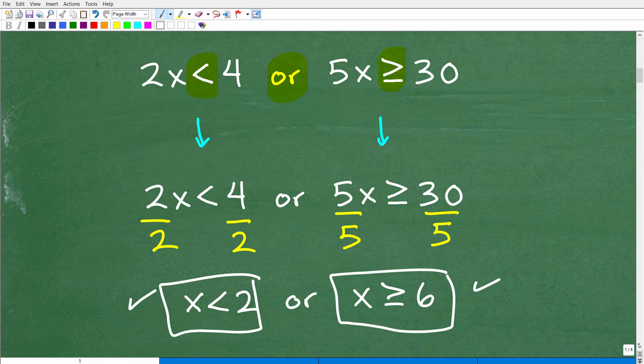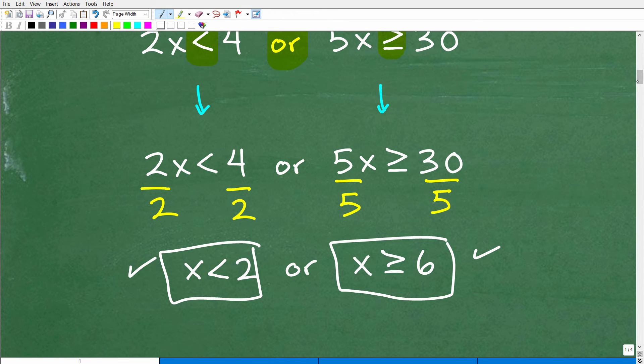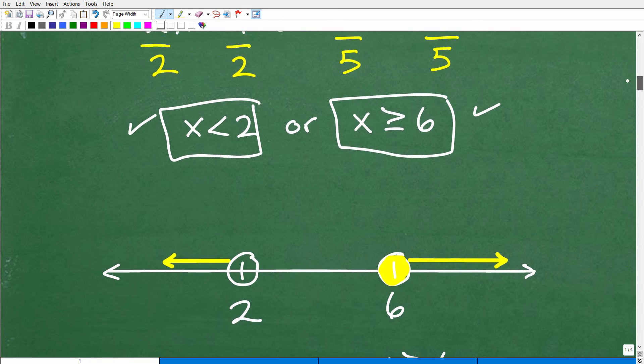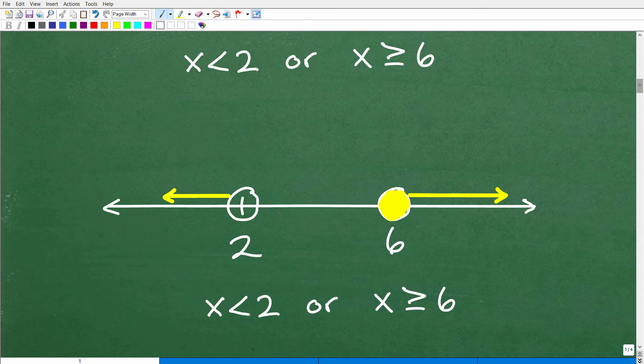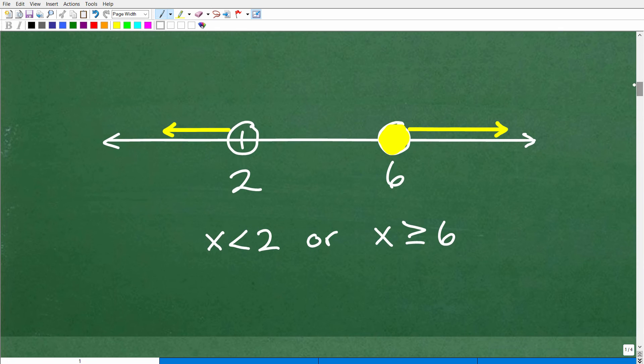All right. So, these would be the solutions to the inequality. But, again, we want to go ahead and graph those solutions. So, how can we graphically represent x is less than 2 or x is greater than or equal to 6? Well, here's the graph. Let's go ahead and look at it right now.